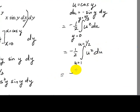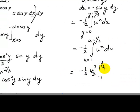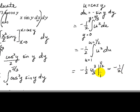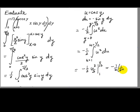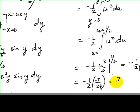That gives us negative one half times u cubed over three, evaluated from one to one half, which is negative one half times one twenty-fourth minus one third, which equals negative one half times negative seven over twenty-four, which equals seven over forty-eight.